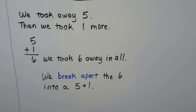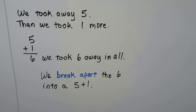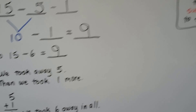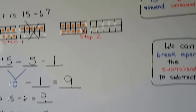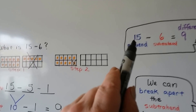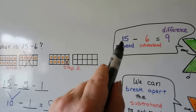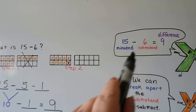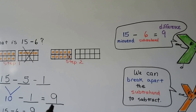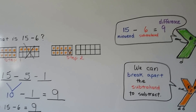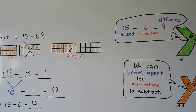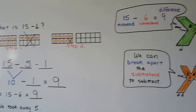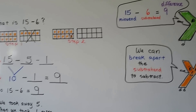We break apart the 6 into a 5 plus 1. The 15 is the minuend, the 6 is the subtrahend, the 9 is the difference, and we can break apart the subtrahend. We broke it apart into a 5 plus 1.